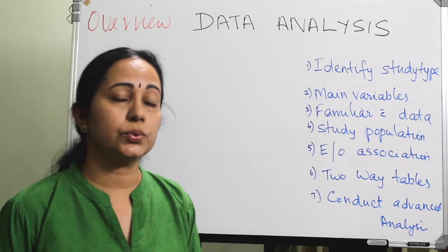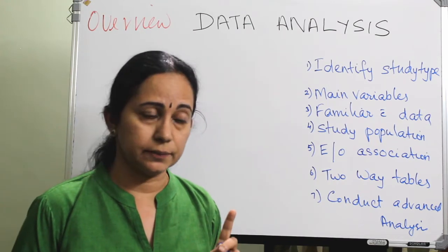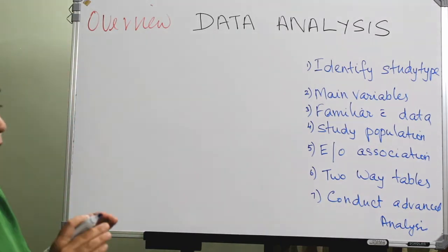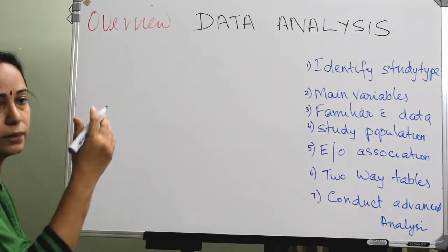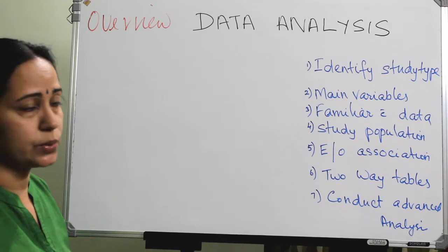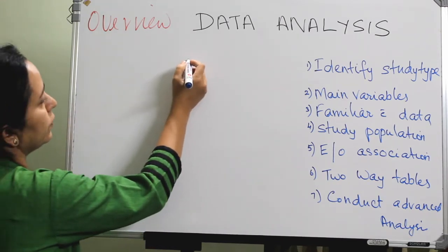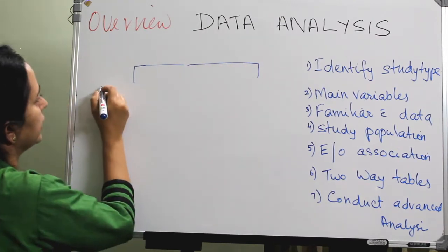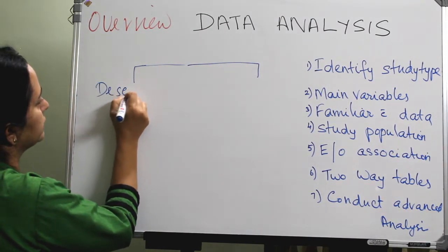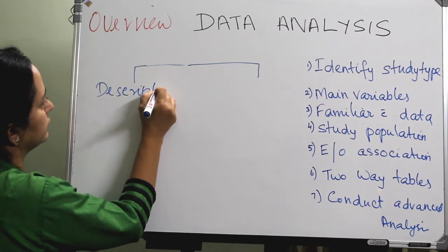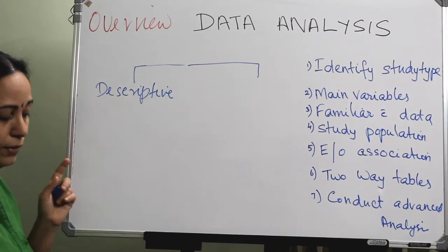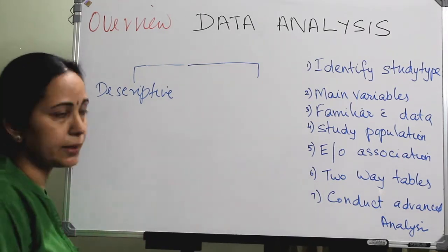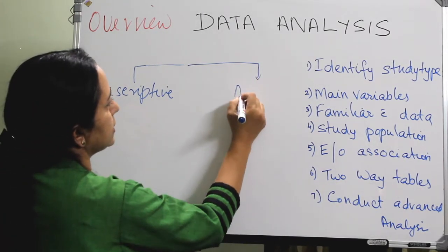You have to go through the objectives and the research question, the methodology, everything. Depending upon the nature of your research question and objective, you can divide the study into two types: one is a descriptive study, if there is only one group; and if there is a comparative group, it is an analytical study.